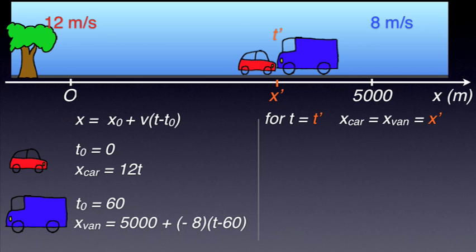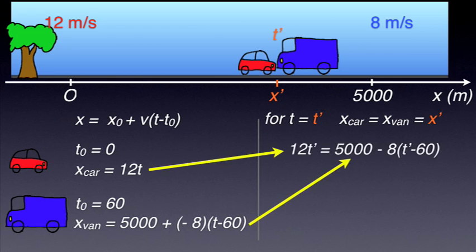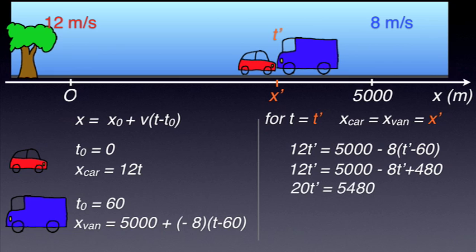From here, we can find the specific value of t, let's label it t prime, for which the condition is met. The results are as follows: t prime equals 274 seconds, and from here we can easily find for x prime a value of 3288 meters.